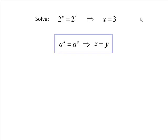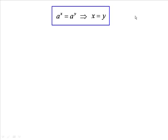And that's a general rule. If you've got the same base number on both sides of an equation, then you just look at the indices and you put them equal to each other.